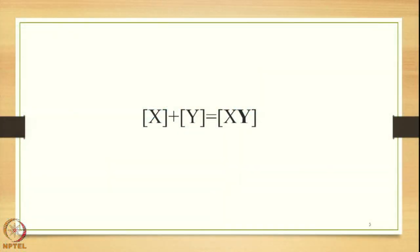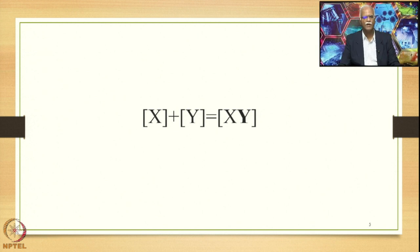The derivation of the Tatpurusha Samasa can be summed up in the form of an equation: x plus y equals xy. x and y are two different independent entities in terms of meaning, word form, and accent, but they are interrelated. The speaker of Sanskrit decides to merge them together into one unit, and the output generated is xy — one meaning, one word form, and one accent.